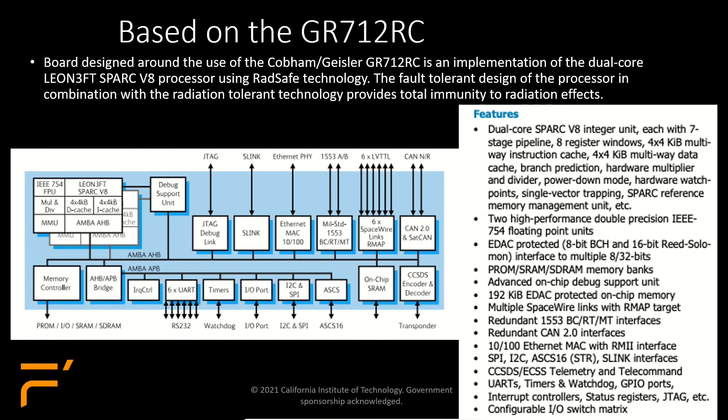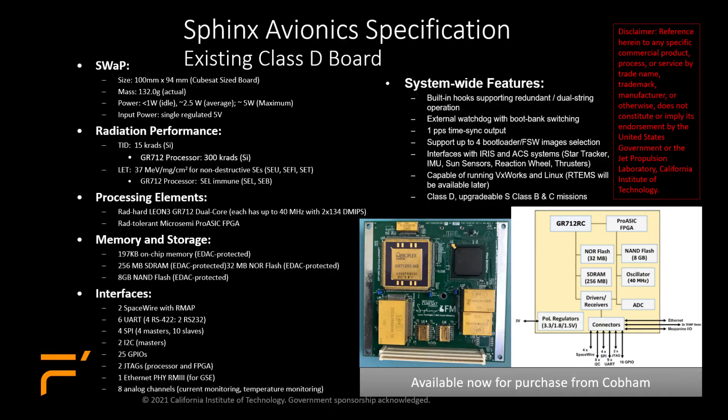Some of the interfaces the GR712 gave us: SpaceWire, UARTs, I2C and SPI, and even a 1553 interface, though we didn't design that into the board initially. It gave us everything we needed for the missions on a small, low power chip. We also wanted to keep it in a small form factor that would fit on a 1U CubeSat if needed.